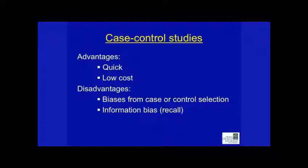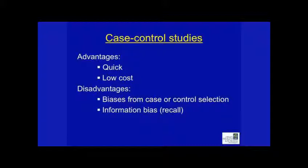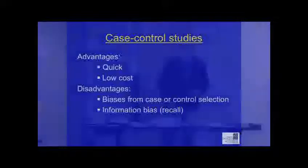A case-control study is also kind of quick and relatively low cost. There are a couple of disadvantages. One is how you classify people — suppose you took all of your cases, the kids who are obese, from a school that didn't have gym classes, and all of your controls from a school that does have gym classes. There's something very important that's not similar in these two groups. Don't try this at home — it takes training and familiarity. The other potential problem is something called information bias: you're asking people to remember their video game use from two years ago, which might not be so accurate.